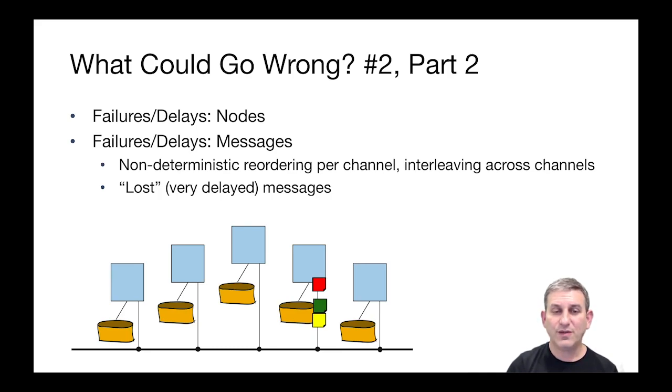Meanwhile, that green message from the first node got interleaved in between the two messages from the second node. Maybe that's okay, maybe it's not. And the purple message was simply lost. It went away. So we get non-deterministic reordering per channel. Yellow and red got reordered here. We get interleavings across channels. The green message was interleaved within the red and yellow in a certain way. And we had a lost message, the purple message. So all these possibilities are things we have to worry about.